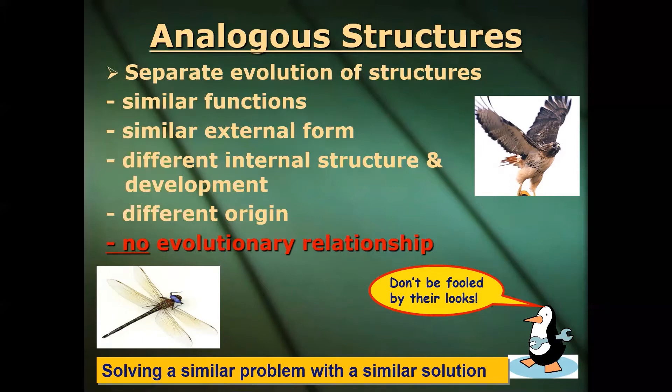A good example of analogous structures is a dragonfly and a bird. They're not closely related whatsoever — yes, they both have wings and they kind of look similar, but structurally they're completely different.